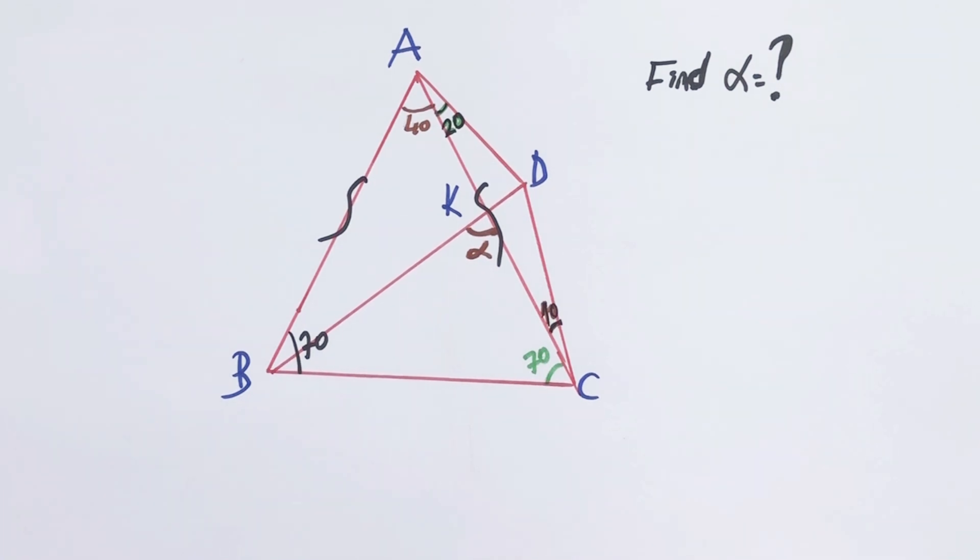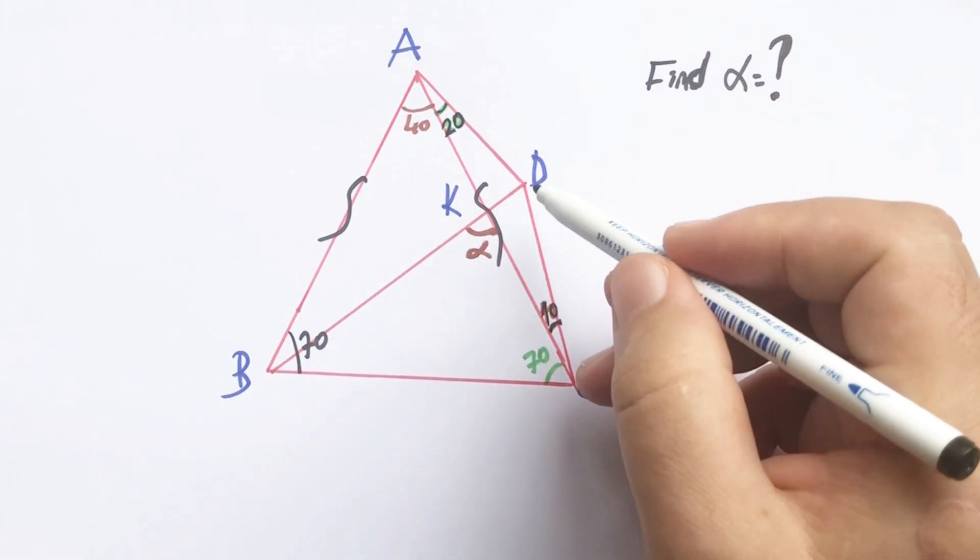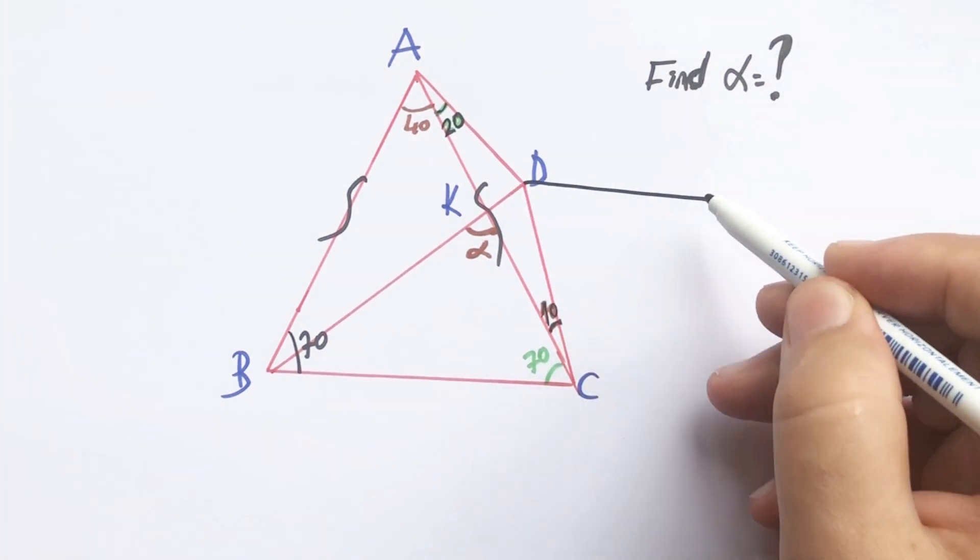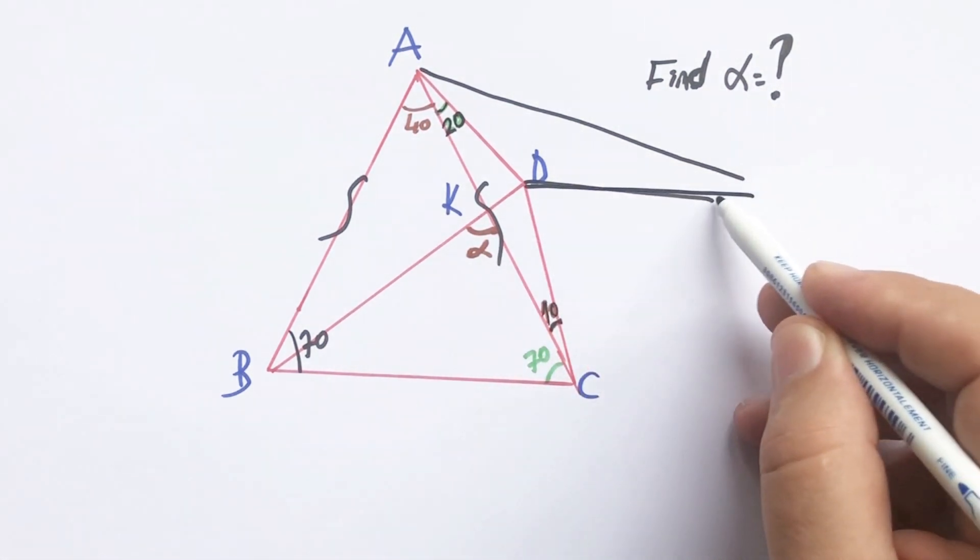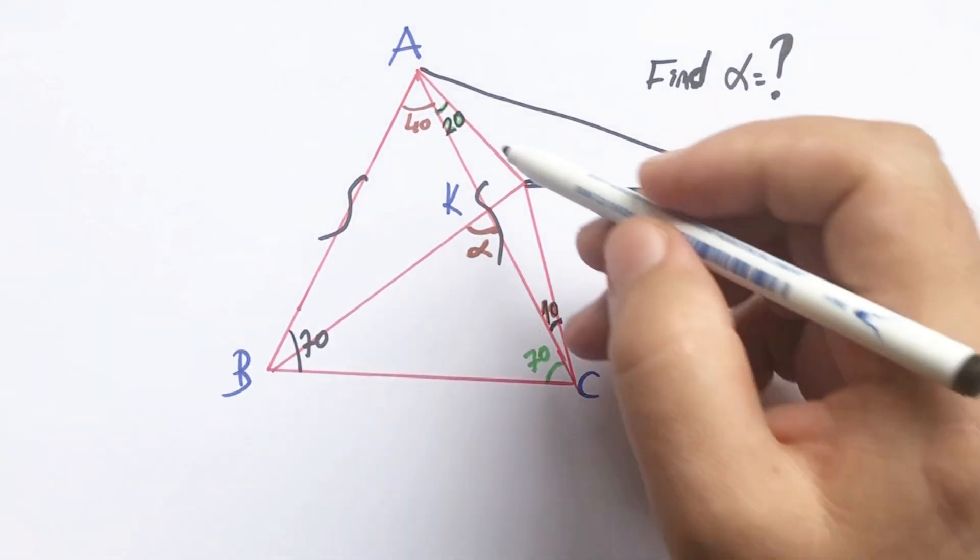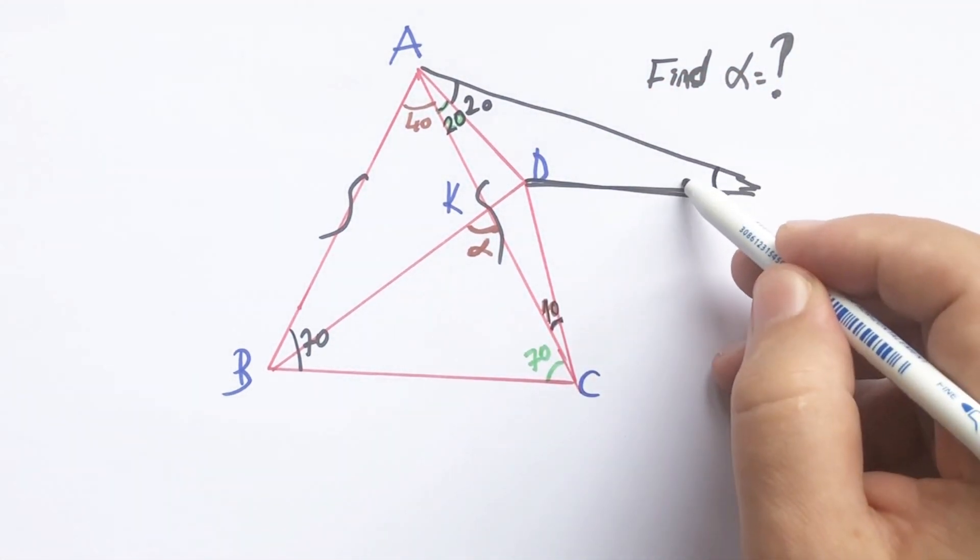Second step, let's draw the symmetry of ADC triangle. Why? Because we are going to have an isosceles triangle and 60 degrees.